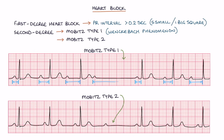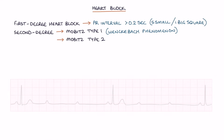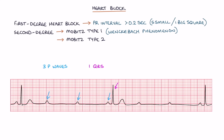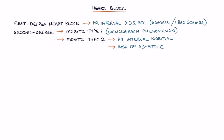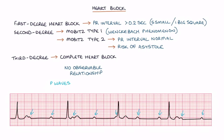Mobitz type 2 is where there's intermittent failure of conduction through the AV node with absent QRS complexes following P-waves. There's usually a set ratio of P-waves to QRS complexes, for example 3:1 block. The PR interval remains normal in Mobitz type 2, and there's a risk of asystole. In a 2:1 block it can be difficult to distinguish Mobitz type 1 from Mobitz type 2. Third degree, or complete, heart block is where there's no observable relationship between P-waves and QRS complexes, with a significant risk of asystole.